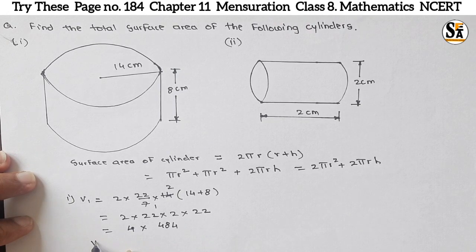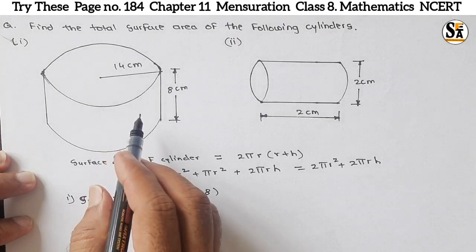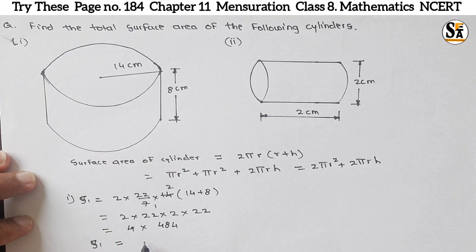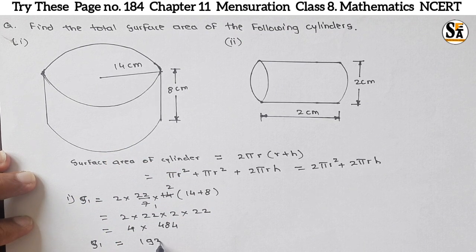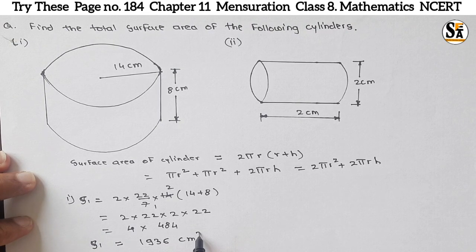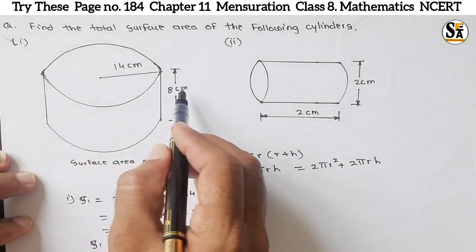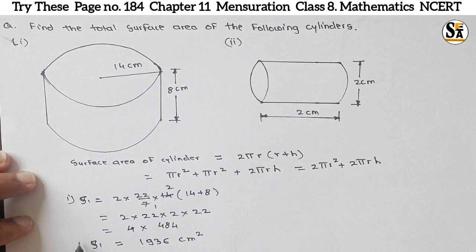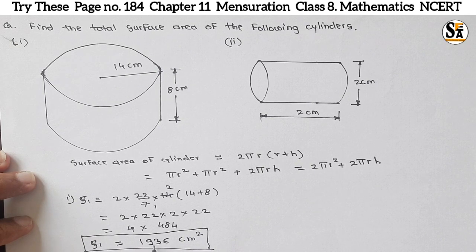We will get S₁, surface area of this first cylinder, S₁ is equal to 1936 and unit will be centimeter square. Why square? Because here we are multiplying two centimeter units, centimeter square. So our first answer is surface area of this cylinder is 1936 centimeter square.